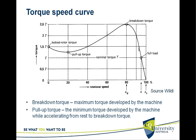The motor settles down at full load, which is the usual normal operating point. The breakdown torque is the maximum torque developed by the machine. The pull-up torque is the minimum torque developed while accelerating from rest to breakdown torque.